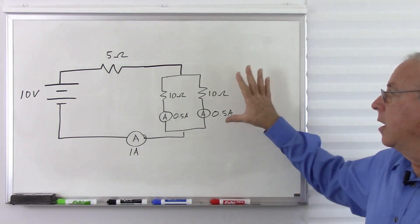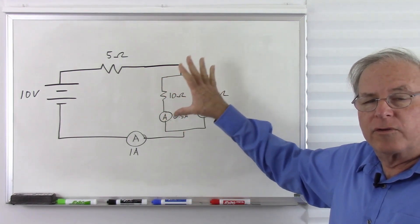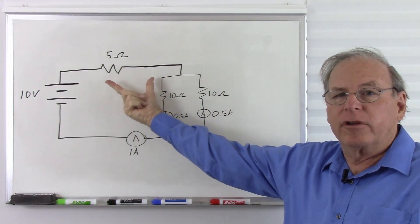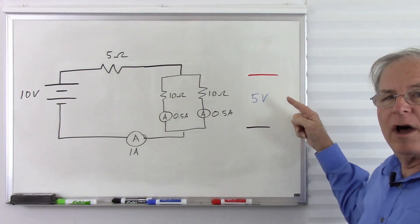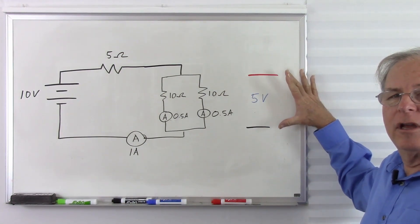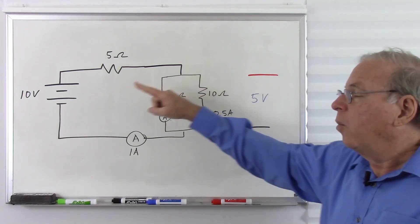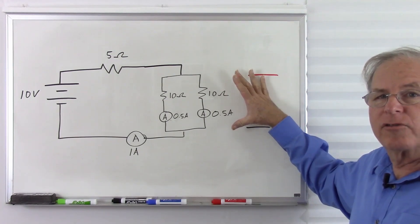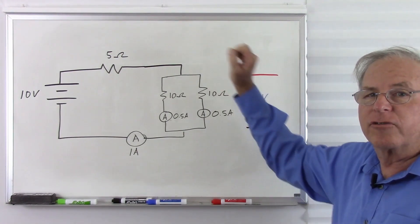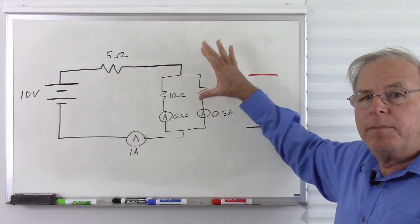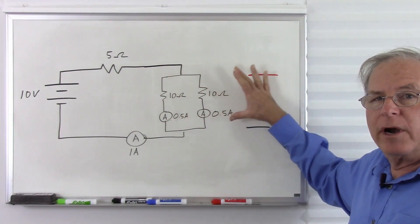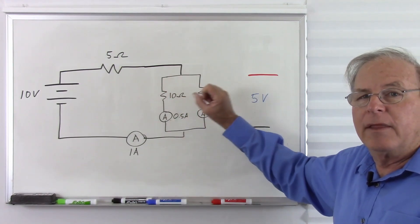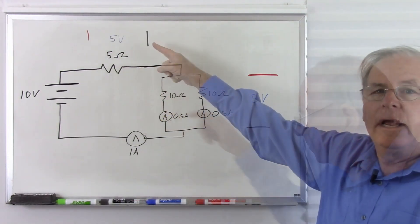Remember, these two resistors when acting as one create a series circuit with 5 volts across the first resistor and 5 volts across the pair. So be careful — we do not have the entire 10 volts across the parallel part. We're no longer a pure parallel circuit, so the voltage is no longer the same everywhere. But within the parallel part, the voltage is the same: 5 volts and 5 volts.